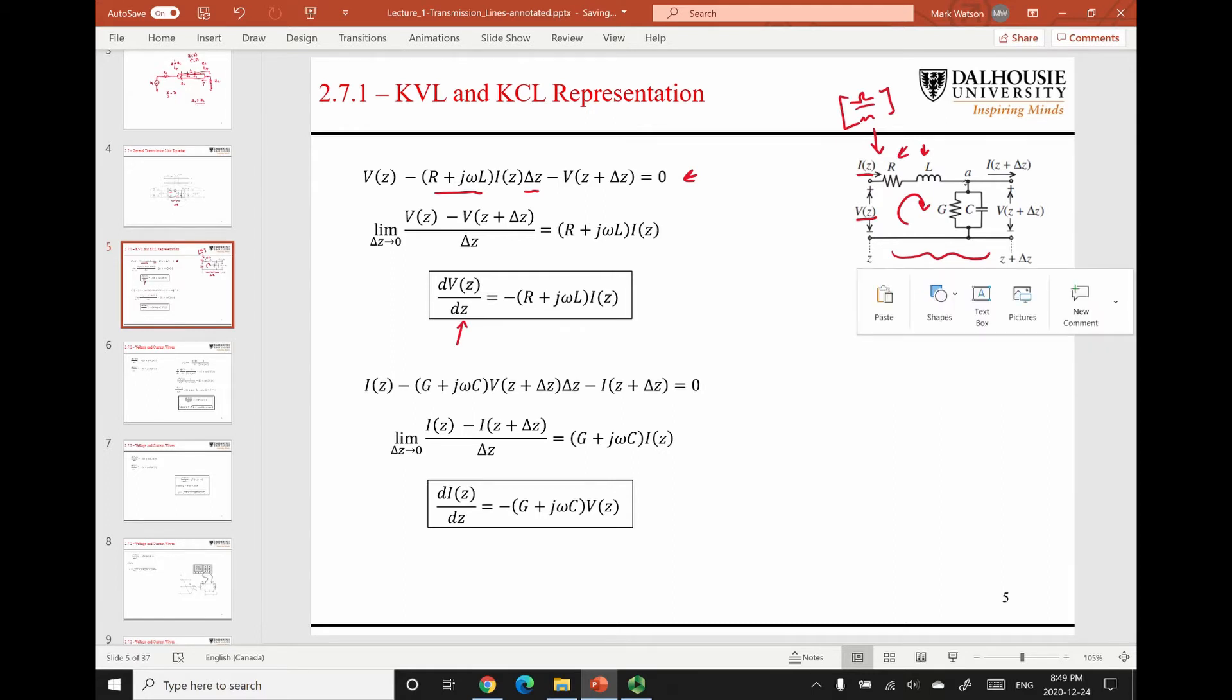We can do the same thing at point A here with Kirchhoff's current law. End up with this equation. Do the same kind of manipulation and end up with another differential equation. So you can see here that there's a voltage and a current and a voltage and a current here. So these two differential equations are coupled and these are the phasor form of the coupled transmission line equations.